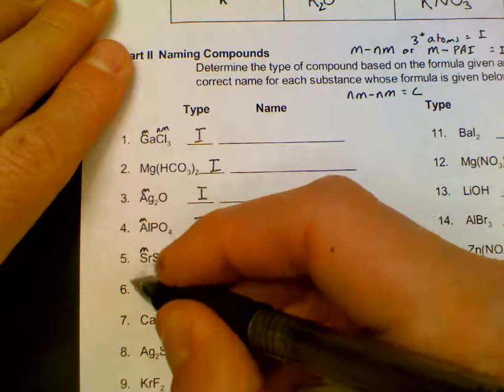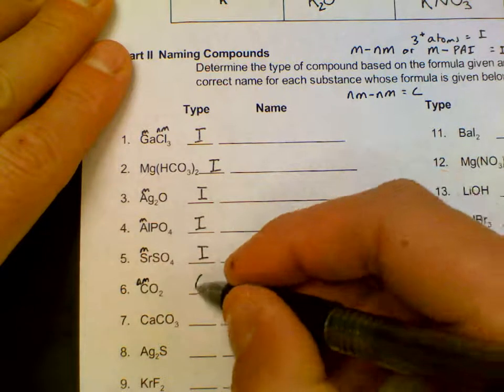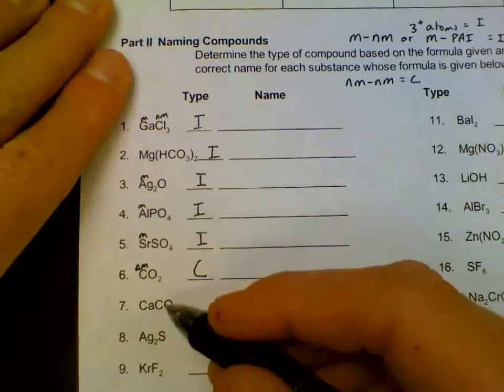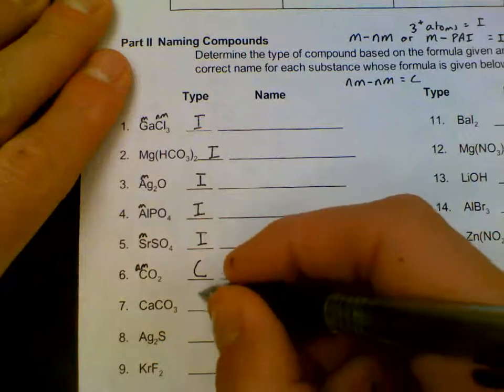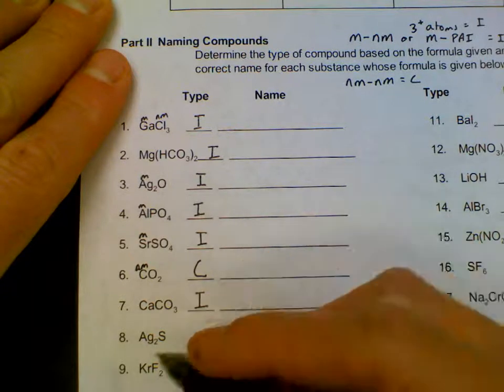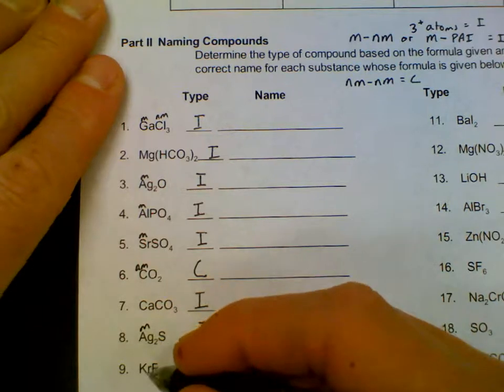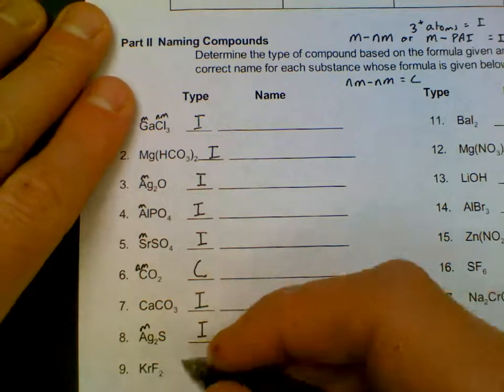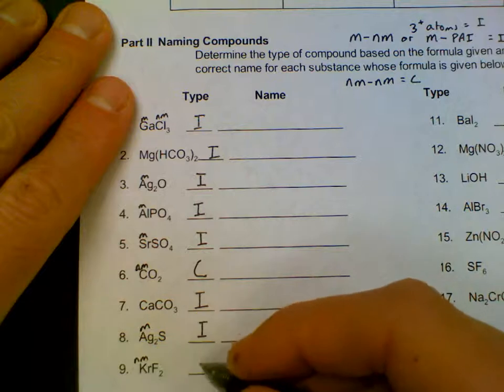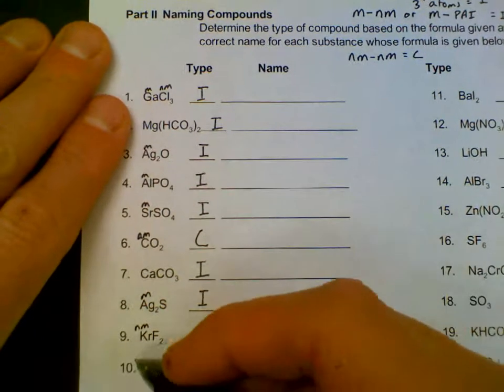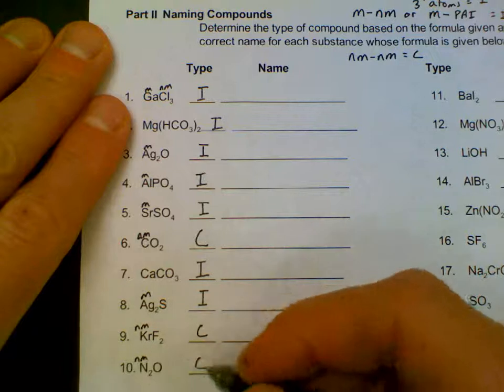Carbon is a nonmetal, which makes this one covalent. Calcium, carbon, oxygen, three or more atoms, ionic. Silver is a metal, ionic. Krypton is a nonmetal, which makes this one covalent. Nitrogen is a nonmetal, which makes this covalent.